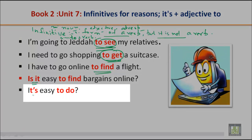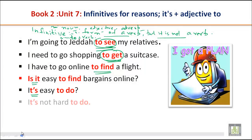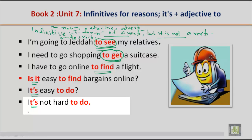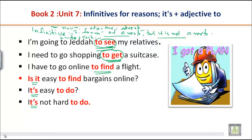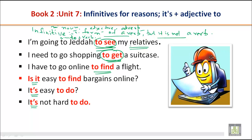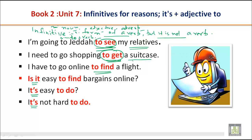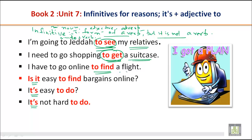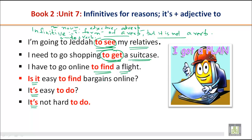It's easy to do; it's not hard to do. In all these sentences, we are using infinitives by adding 'to' to the verb, and each gives a reason. I'm going to Jeddah — why? To see my relatives. I need to go shopping — why? To get a suitcase. I need to go online — why? To find a flight.